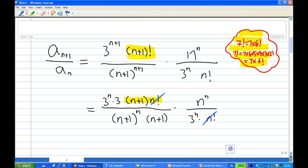So having done this, then I will see a lot of cancellation. 3 power n and 3 power n will cancel. n plus 1 and n plus 1 will cancel with this n plus 1.